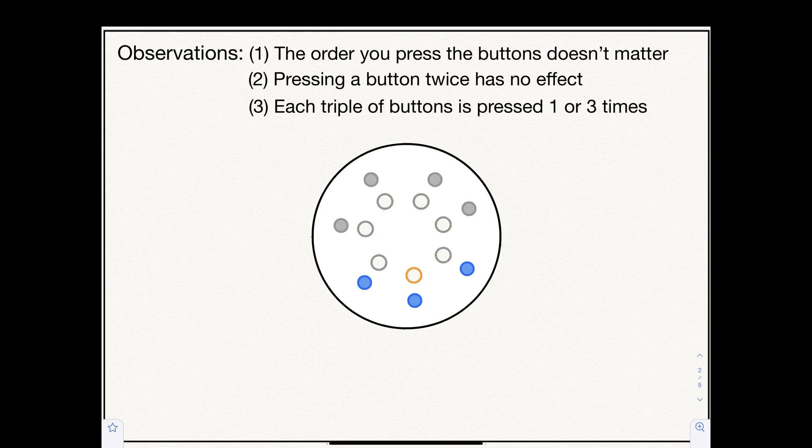The third observation is that in the solution, each triple of buttons is pressed one or three times. This is because zero or two presses leaves the corresponding light off.